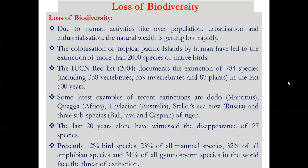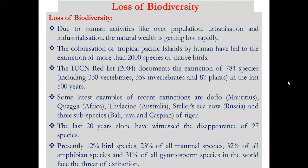The IUCN — International Union for Conservation of Nature and Natural Resources — according to its 2004 Red Data List, approximately 784 species have gone extinct from Earth's surface in the last 500 years. Of these, 338 were vertebrates, 359 were invertebrates, and 87 were plant species.